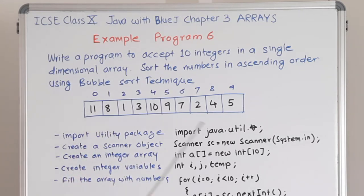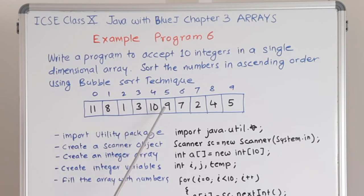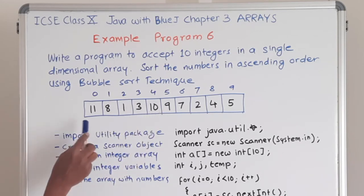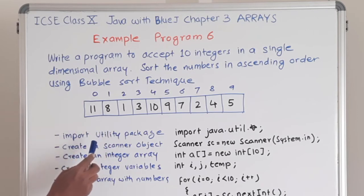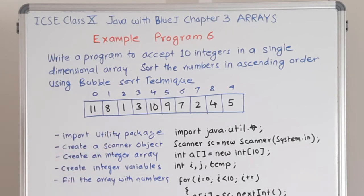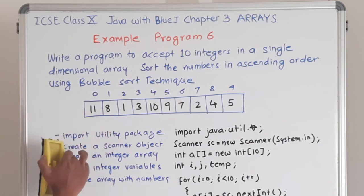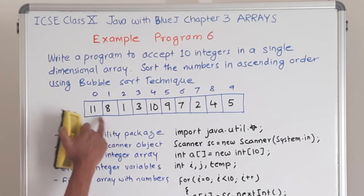Let us consider this representative diagram of an array. This array contains 10 cells and the index numbers will be from 0 to 9. These are the numbers stored inside the array. When doing a bubble sort, we compare two adjacent cells. For ascending order, the smaller number goes to the left and the bigger number goes to the right. If we compare the first two cells and 11 is bigger than 8, we interchange 8 and 11.